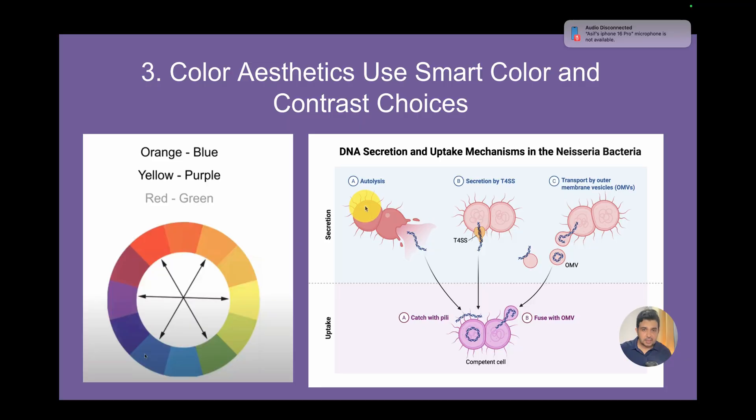The border of this shape is actually the same color but a darker version of the same color. The style, length, and width of the arrow is also the same, just to show different processes. Here is secretion and here is uptake.